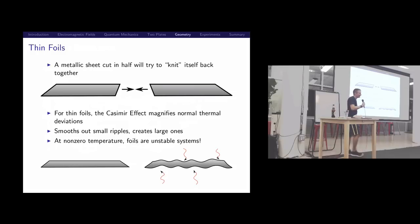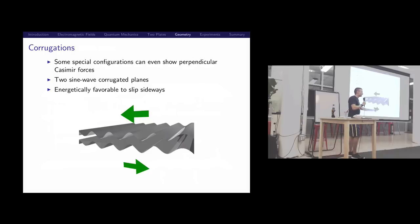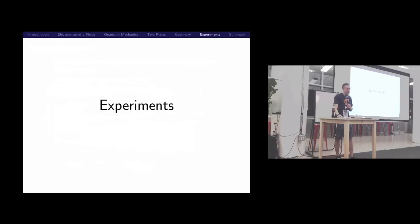If you take edges and you put them next to each other, the Casimir effect will try to suck them together. If you cut a piece of tin foil, a very small piece, it will actually knit back together and try to heal. The Casimir effect hates corners, so it tries to smooth out small variations. But it likes edges to come together. It will magnify big variations. Foils, if you leave them in empty space, will just crinkle up because of the Casimir effect.